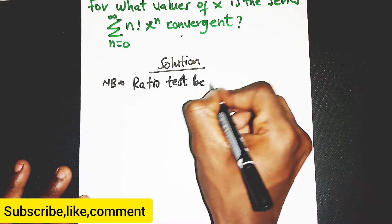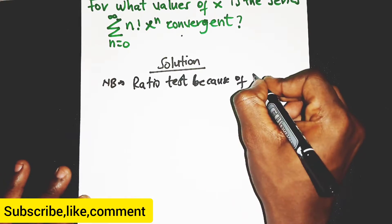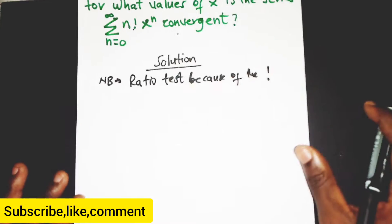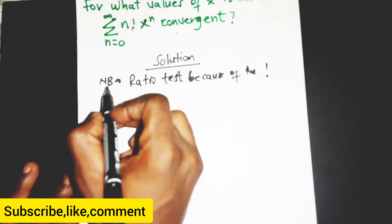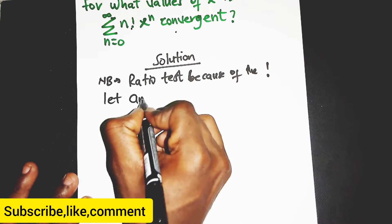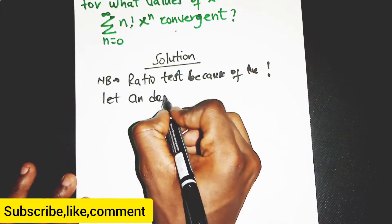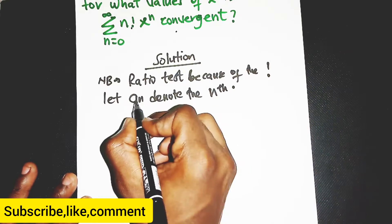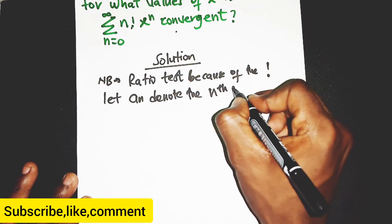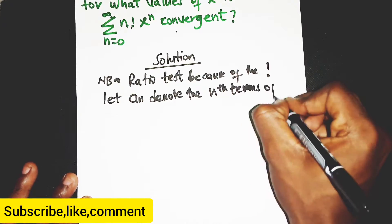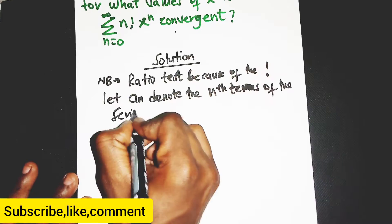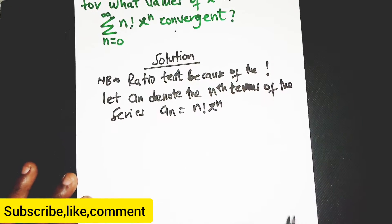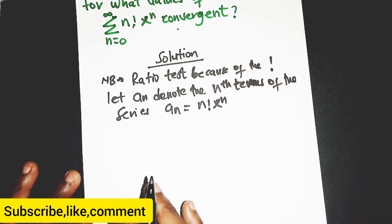We are using the ratio test because of the factorial present here. So let's move on. We let a_n denote the nth term of the series. So a_n will be equal to n factorial times s to the power n.